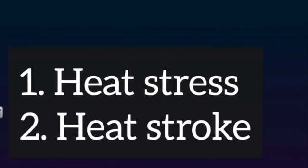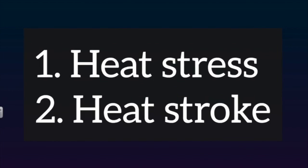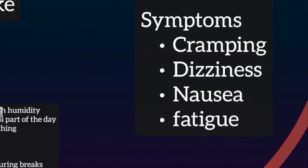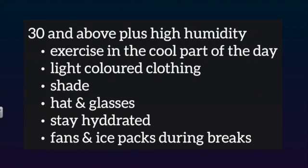Exercising in hot and humid conditions means hyperthermia can result. The two heat-related illnesses associated with this are heat stress and heat stroke — heat stroke being the more serious and potentially life-threatening. Symptoms of heat stress include cramping, dizziness, nausea and fatigue. When temperatures are above 30 degrees and humidity above 50%, preventative measures should include exercising in the early morning or late afternoon, and if this is not possible, exercise should be cancelled for the day.